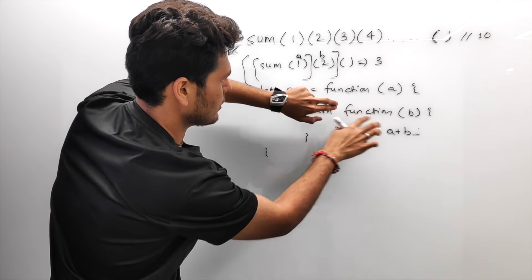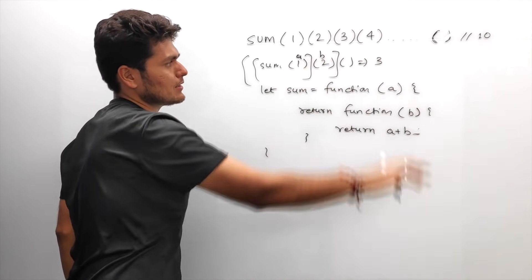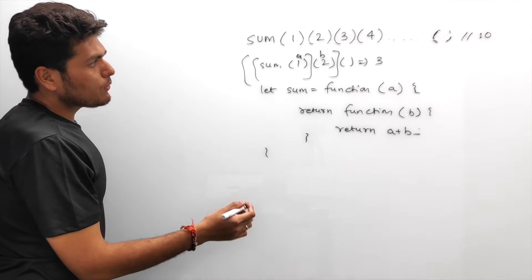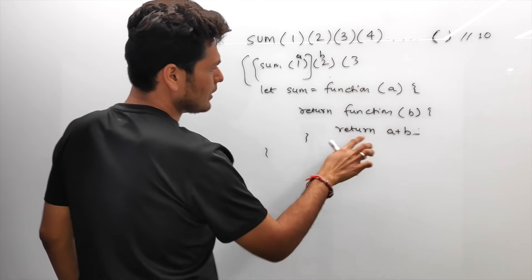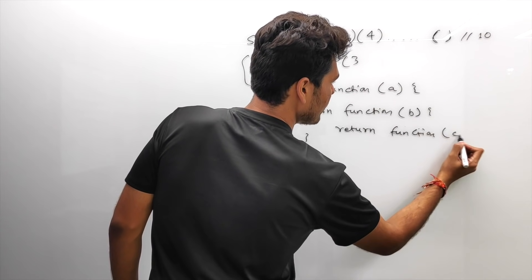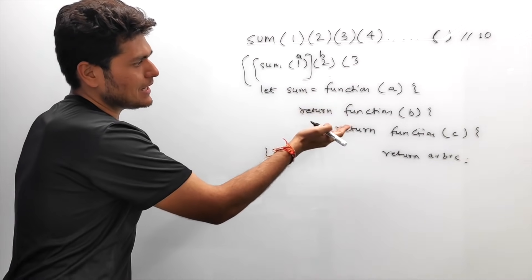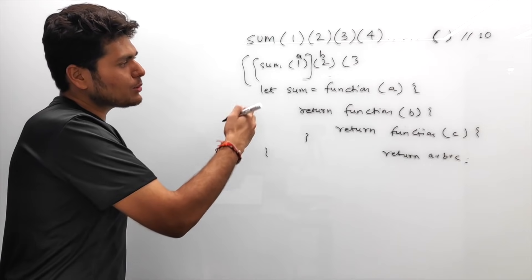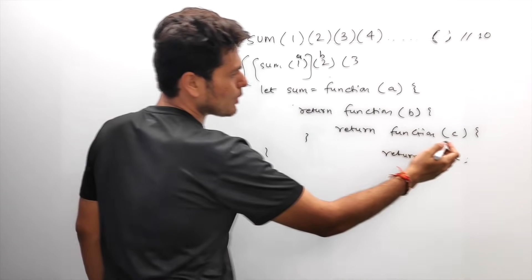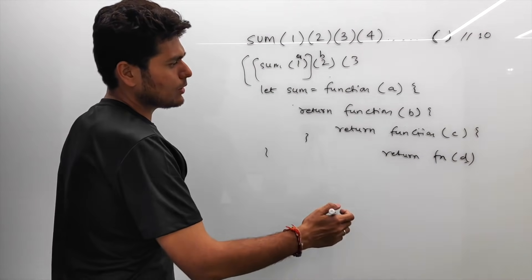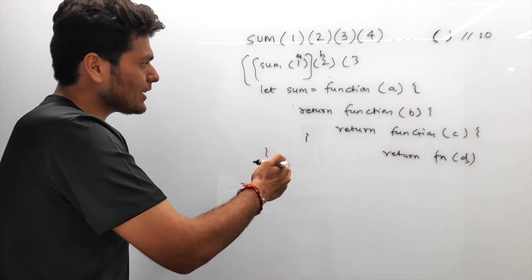That inner function takes `b` and returns the sum of `a` and `b` — that gives us 3. Now what if we had more arguments? If we had a third argument `c`, this should again return a function that takes `c` and returns `a + b + c`. We can see a clear pattern here. If there were also `d`, we'd return yet another function. This pattern calls for a recursive solution.